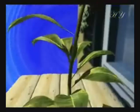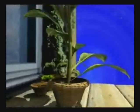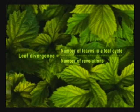This arrangement is based on an exceedingly complex calculation. If N is the number of revolutions we need to make, beginning at one leaf, until we encounter another leaf at the same level, and if P is the number of leaves encountered during this cycle, then P divided by N is the leaf divergence that exists in plants — that is, the number of leaves in a leaf cycle divided by the number of revolutions.